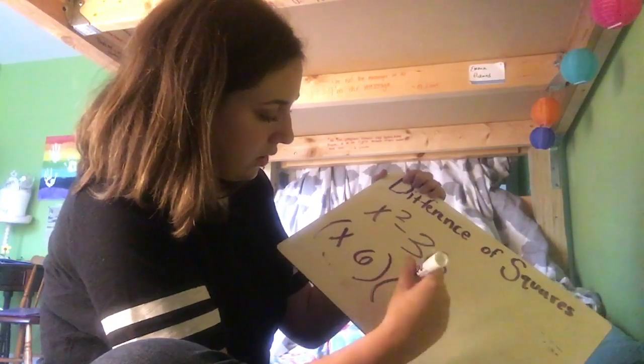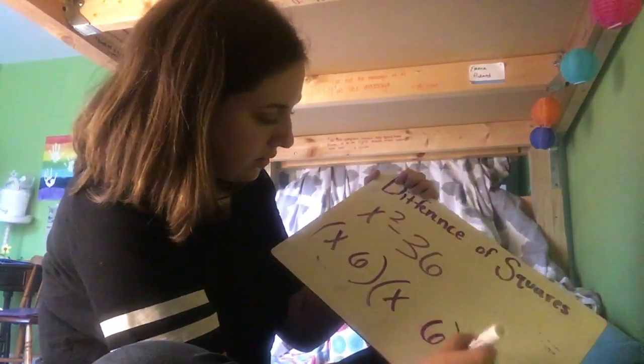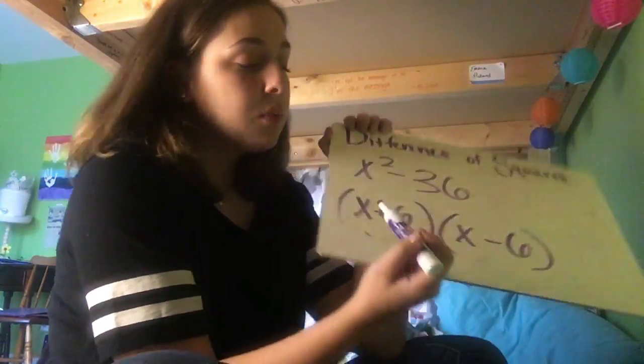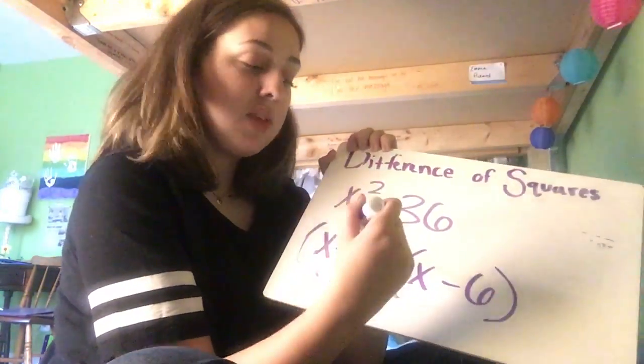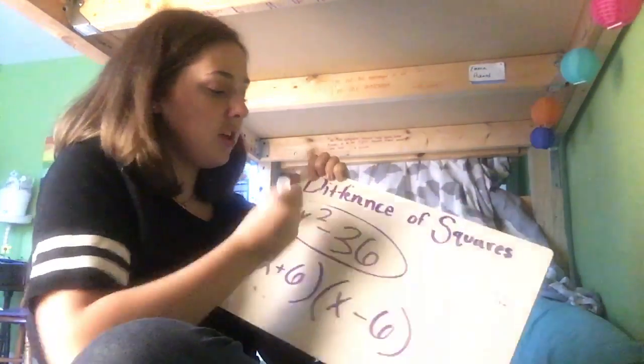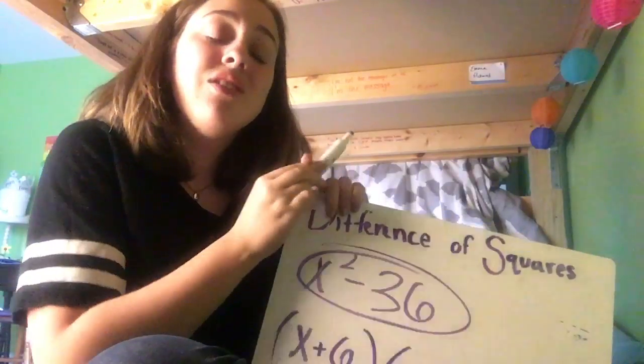x, 6, x, 6, positive, negative. It doesn't matter which order the positive and negative are in as long as one of them is positive and one of them is negative. That way, your b number cancels out and it will look just like you started with. That's how you factor using a difference of squares.